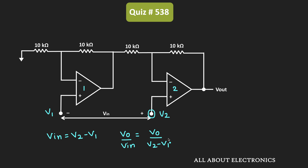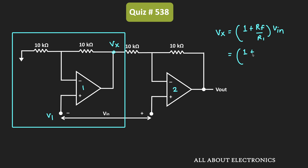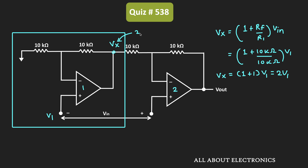Let us consider op-amp no.1 only. Since it is configured in the non-inverting configuration, its output Vx equals 1 plus Rf divided by R1, times Vin. The feedback resistor Rf is 10 kilo ohm and R1 is also 10 kilo ohm, and here Vin is V1. So Vx equals 1 plus 1 times V1, which equals 2V1. The voltage at that node is therefore 2V1.